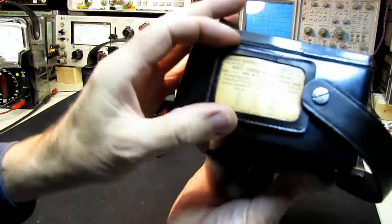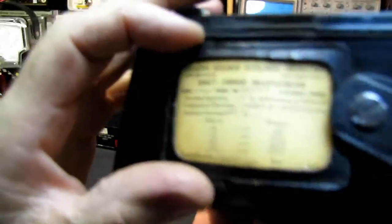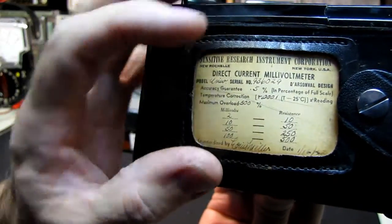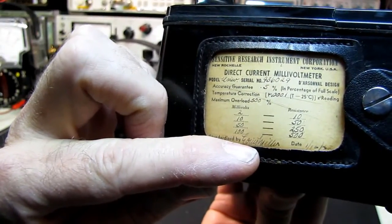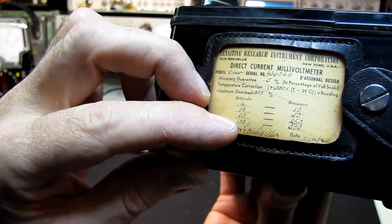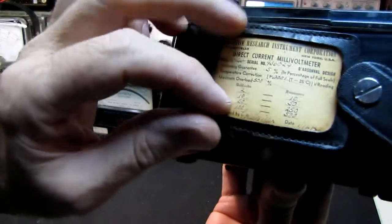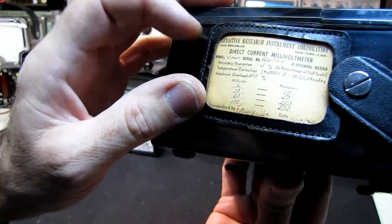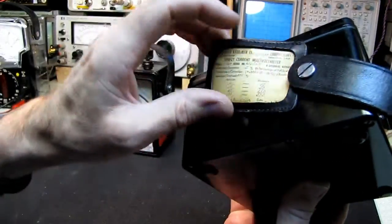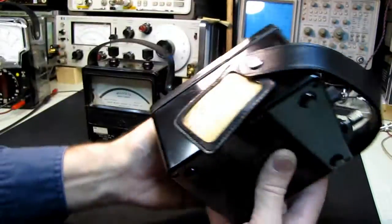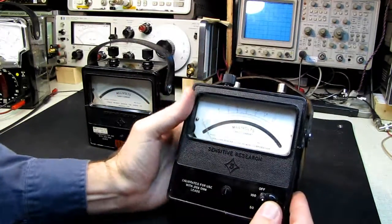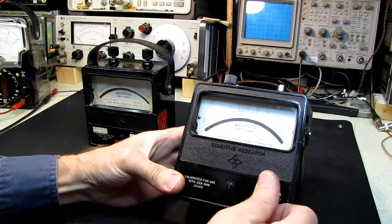If you take a look on the side of this one, this is a Sensitive Research Corporation. It's got the guy's signature down here that calibrated it and it's got two millivolts, 10 millivolts, 50 millivolts, 100 millivolts and what it actually read, the serial number, model number. They took pride in what they did and this has remained with the meter since the day it was manufactured. Is there a date on here? Yes, 1962.